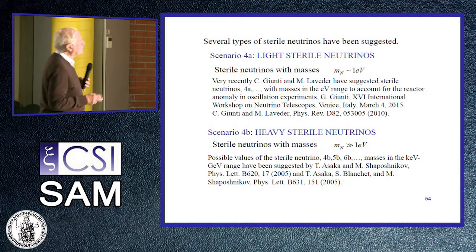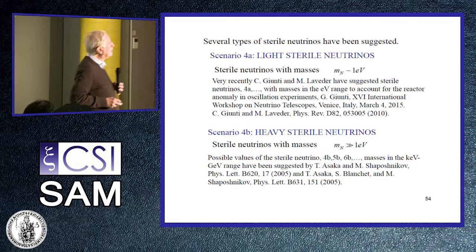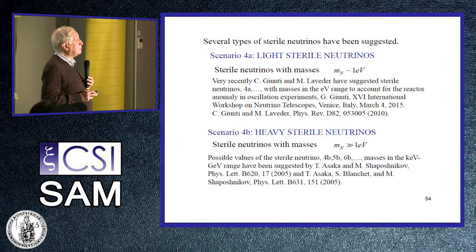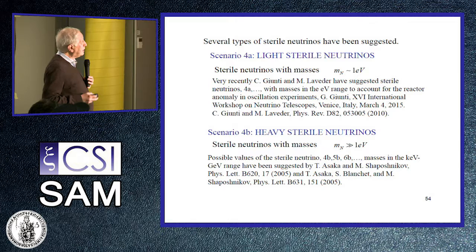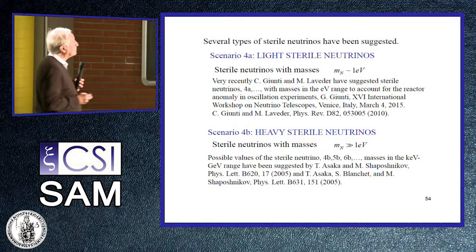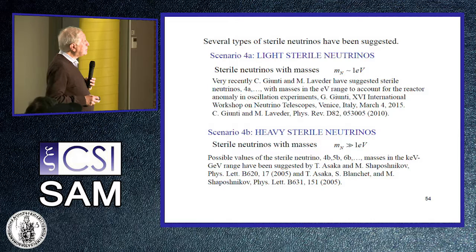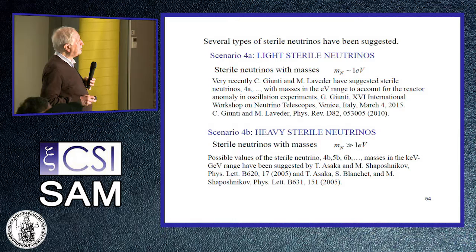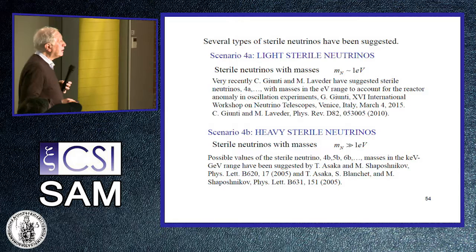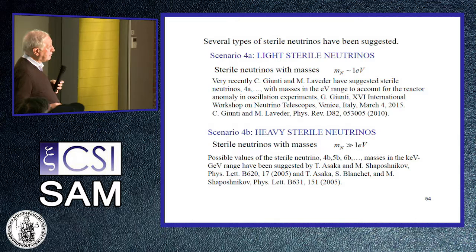Several types of sterile neutrinos have been suggested. There are sterile neutrinos with masses of order electron-volt, suggested by Giunti and Laveder, introduced to account for the reactor anomaly in oscillation experiments. Then there are heavy sterile neutrinos with masses in the keV-GeV range, suggested especially by Shaposhnikov. The experimental program at CERN LHC is also looking for this type of neutrino. A hypothetical neutrino mass spectrum includes the three known neutrinos in the milli-eV range, light sterile neutrinos at eV-keV, and heavier ones up to those responsible for the seesaw mechanism.